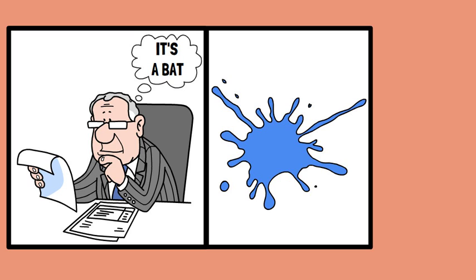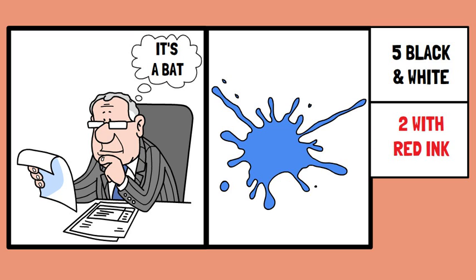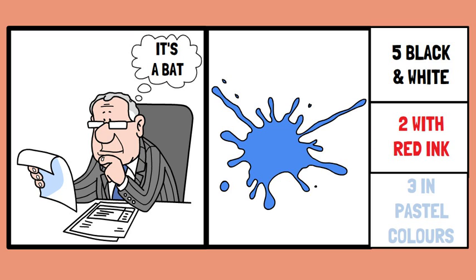The test consists of 10 inkblots: 5 of them are in black and white, 2 with some red ink, and the remaining 3 in pastel colours. The test has two phases: performance proper and inquiry phase.